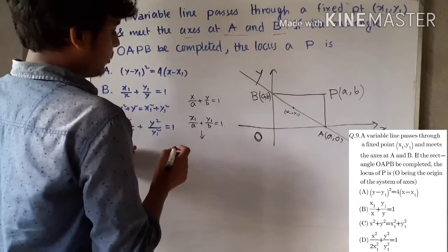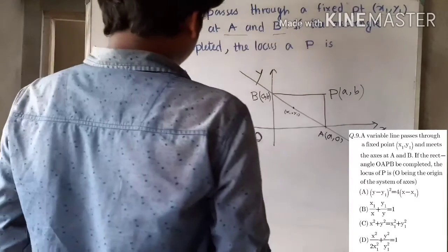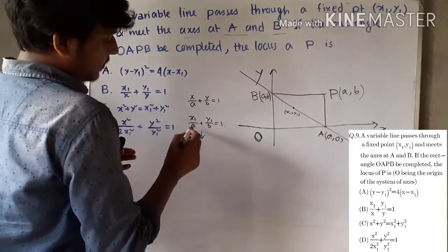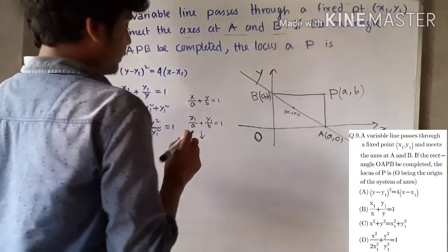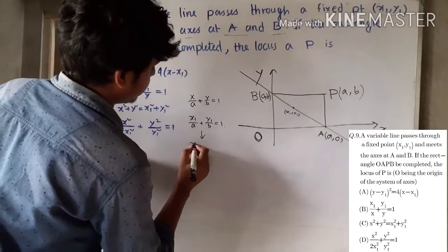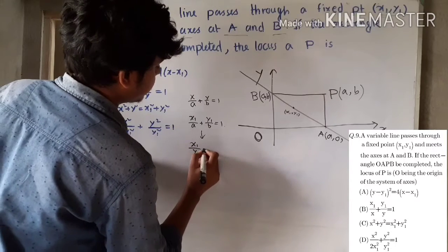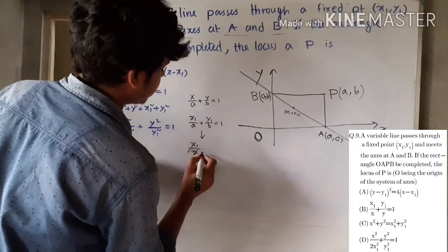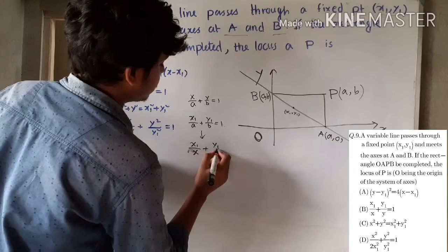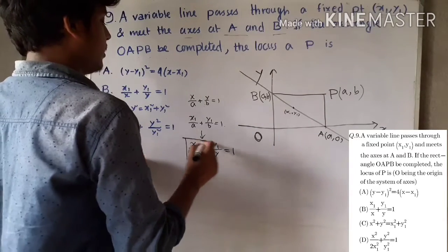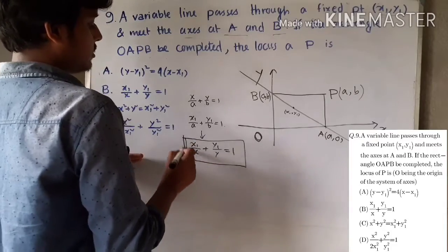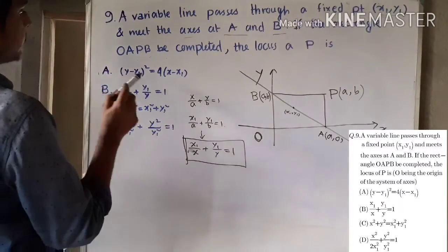By putting x in place of a and putting y in place of b, we get x1/x + y1/y equals 1. This is our required locus of P.